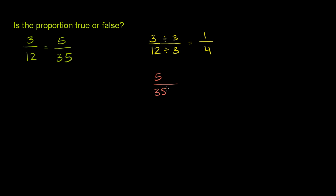Well these are both divisible by 5, so let's divide the numerator and the denominator by 5. If we divide the numerator by 5 and the denominator by 5, the numerator 5 divided by 5 is 1, and then 35 divided by 5 is 7.